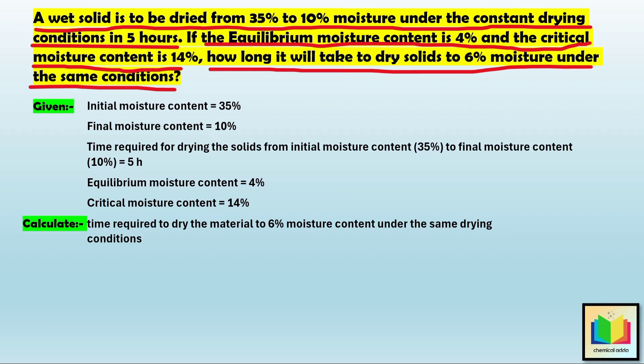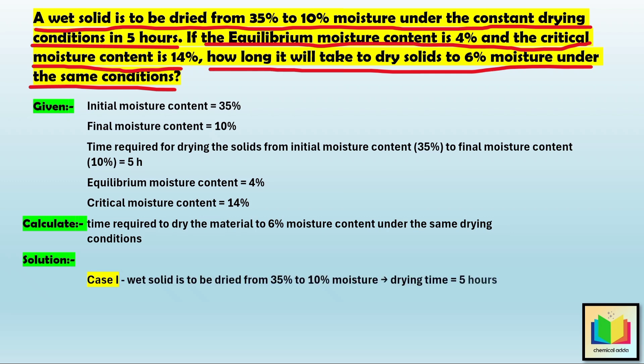If you notice carefully, this example actually involves 2 cases. In the first case, we are told that a wet solid is dried from 35% to 10% moisture content, and the drying time for this is given as 5 hours. This means that we already know how much time it takes to dry the material from 35% to 10% under constant drying conditions. And in the second case, a wet solid is to be dried from 35% to 6% moisture under the same drying condition as the first case, and we are asked to calculate the drying time. Now let's move on and solve the example step by step.